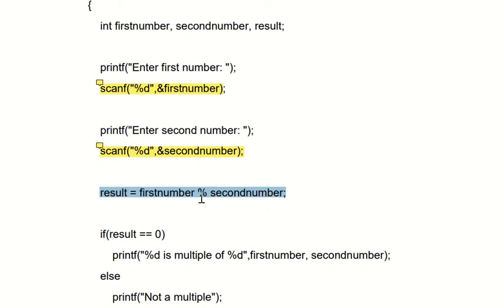So here in this case result equal to first number mod second number, so result equal to 80 mod 4, so obviously we will get answer of remainder as 0 only. So right now the value of result is 0.